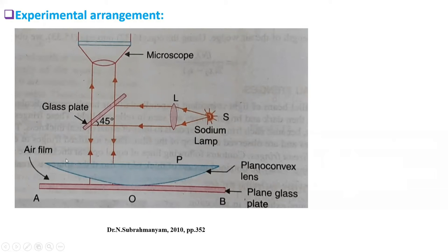See, this plane glass plate and this is the plano-convex lens. And here, there is an air film. So this light falls on this air film. And again, it is reflected. And here we get an interference pattern.